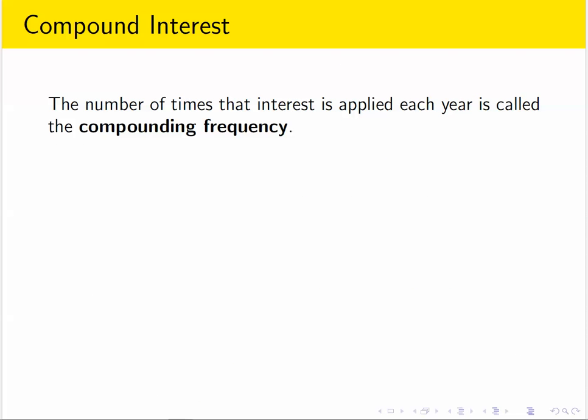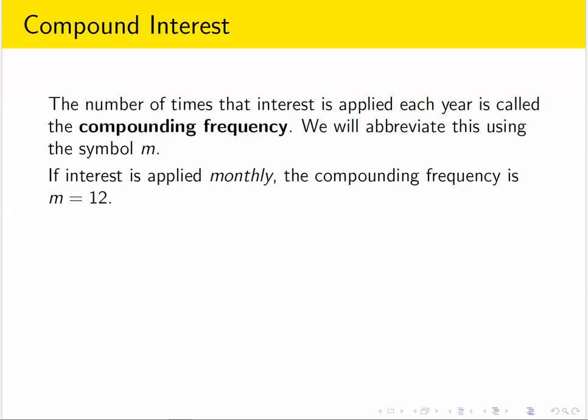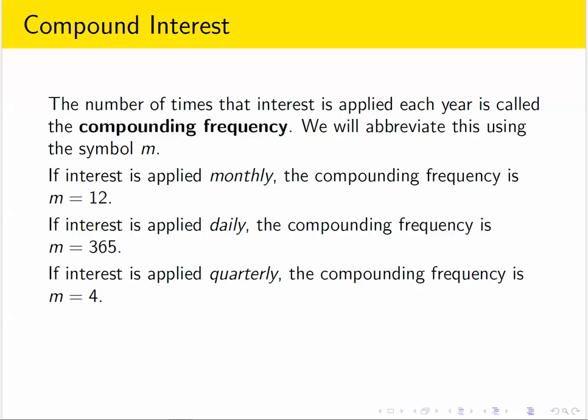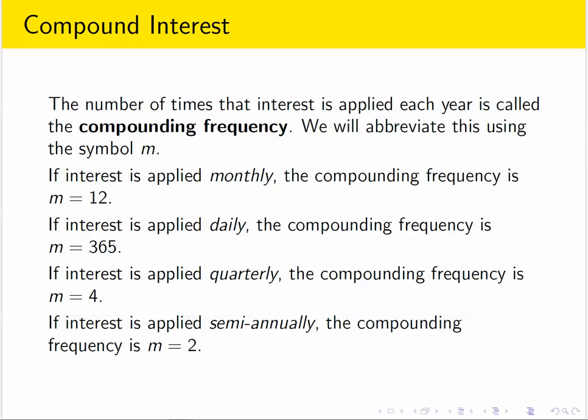So the number of times interest is applied each year is called the compounding frequency, and if we use the symbol m to represent that, then we can say if you're doing monthly compounding, you're compounding 12 times per year. If you're doing daily compounding, then the frequency is 365 times per year. If you apply interest quarterly, once every quarter, meaning once every quarter of a year, then your compounding frequency is four times per year. And semi-annually would be once every six months, every half year, so that would be twice per year.